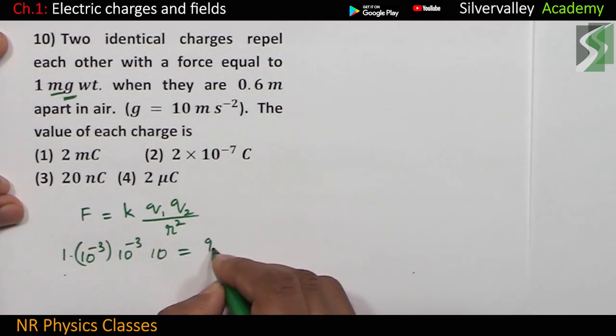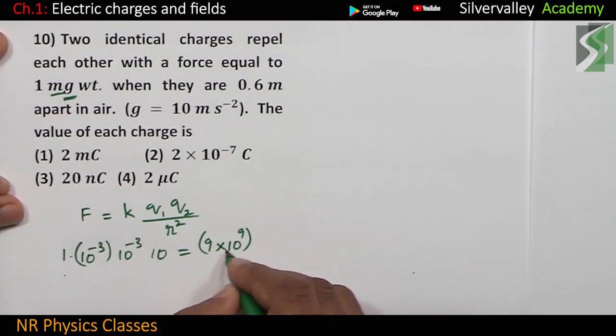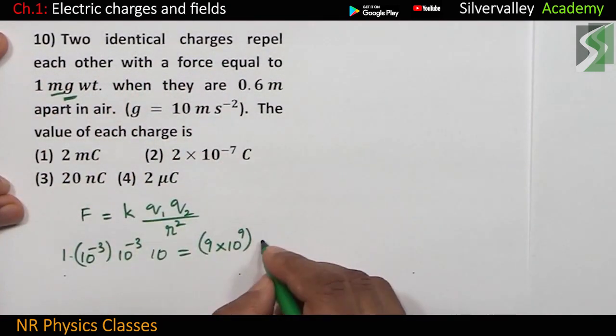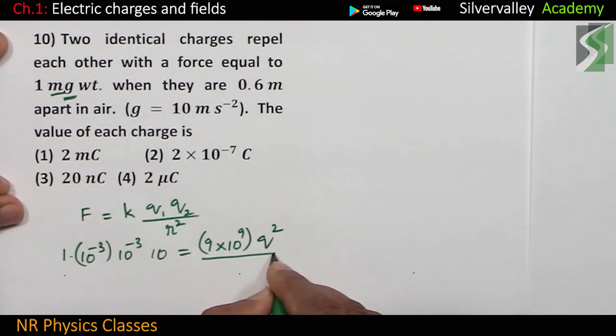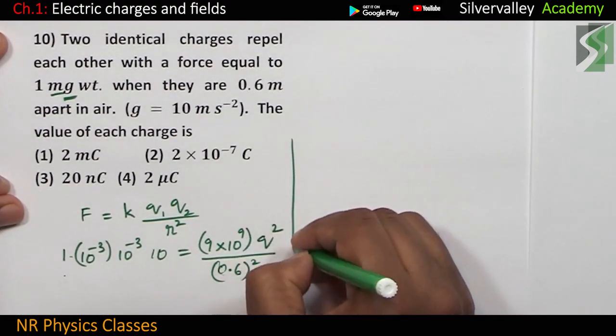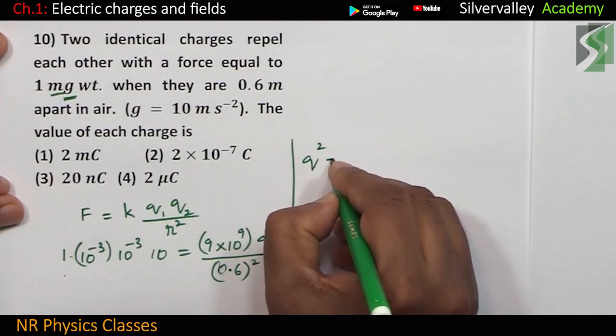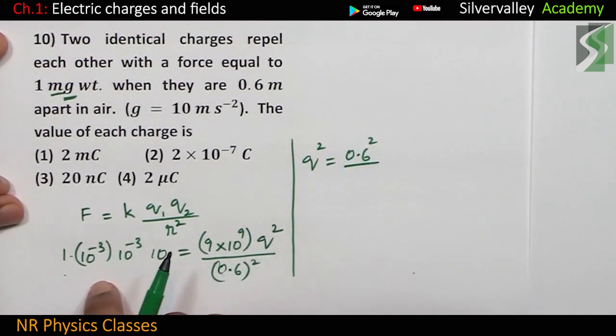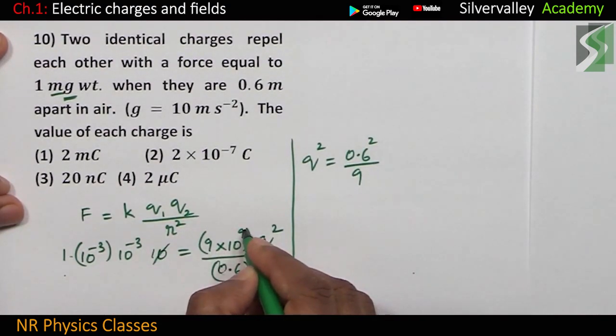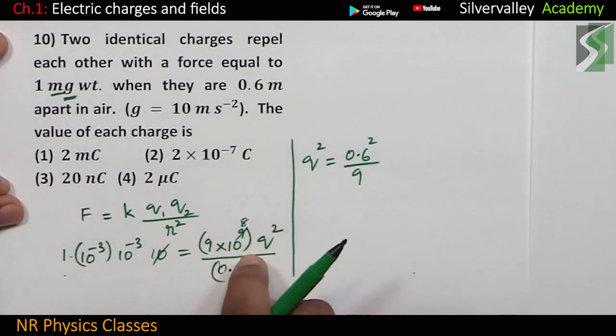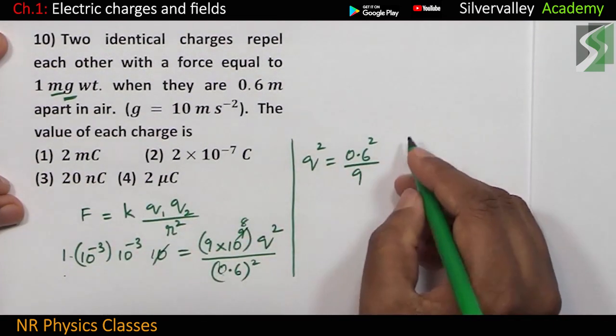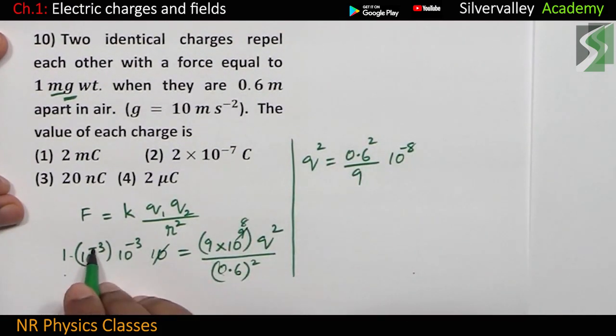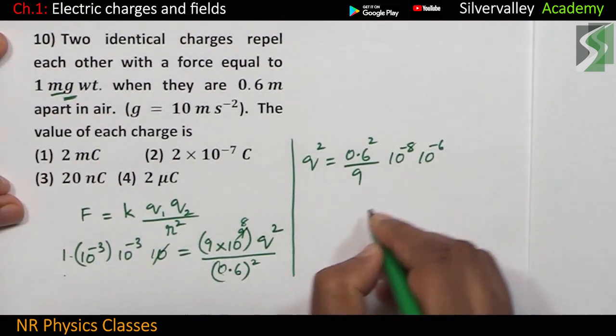Constant is 9 into 10 to the power 9. 2 identical charges. Q into Q, Q square by distance is 0.6, 0.6 square. Now, Q square is 0.6 square by 9, 10. 10 to the power 9 is 10 to the power 8. This 10 to the power 8 goes to numerator becomes 10 to the power minus 8. Minus 3 minus 3, 10 to the power minus 6.